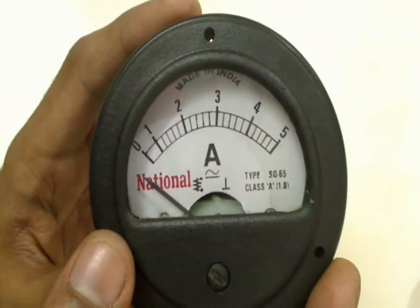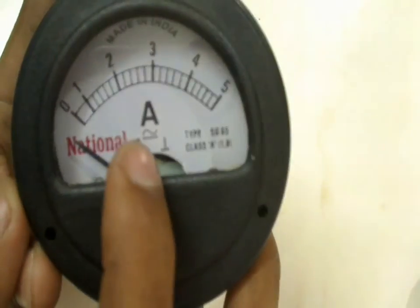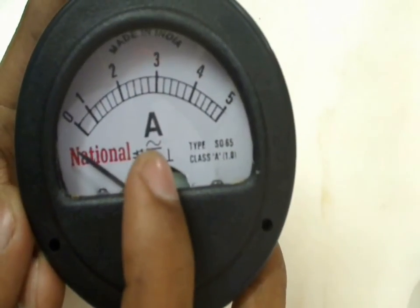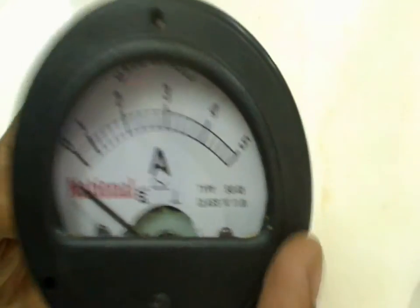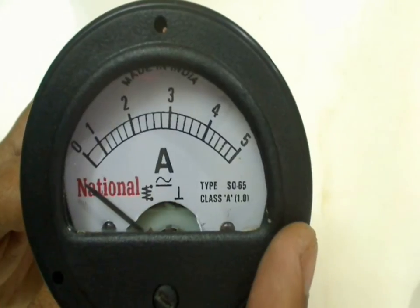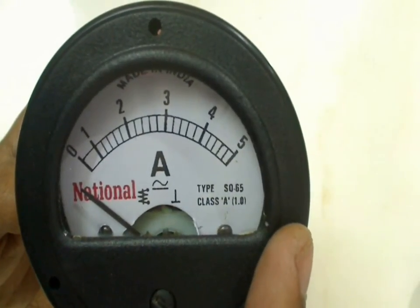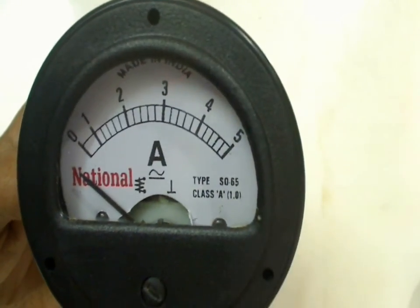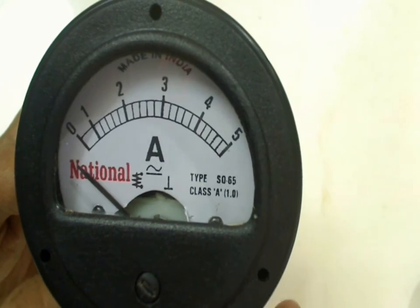As you can see, the one I have here is an AC ammeter. You can tell that this is an AC ammeter by seeing the sine wave mentioned below the A. Usually the ammeter resistance should be as low as possible. Ideally it is given as 0 ohms, but usually the ammeters which are available outside won't have 0 ohms.